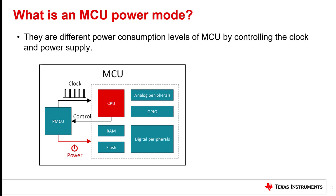Generally, we can divide power modes into two categories. One is an active mode. In this mode, an MCU will run at its highest performance and all or most of the peripherals will be on.